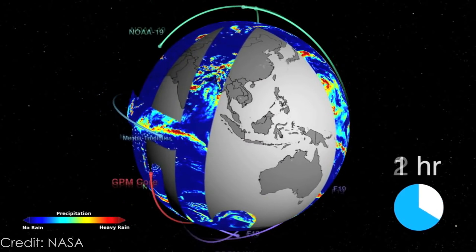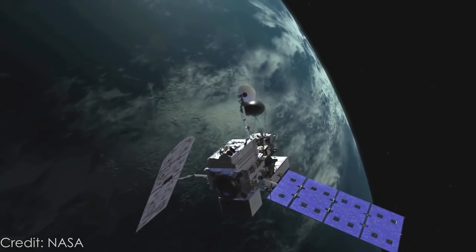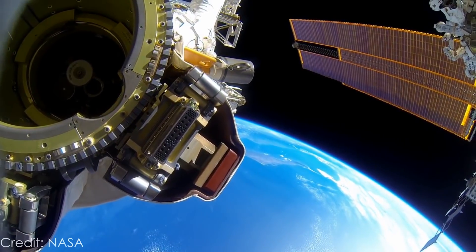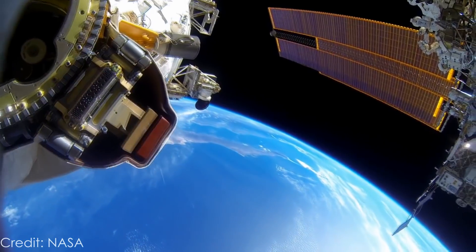Satellites meant to stay in orbit long-term have small engines to resist these forces and help them stay in their correct orbit, a process known as station-keeping.